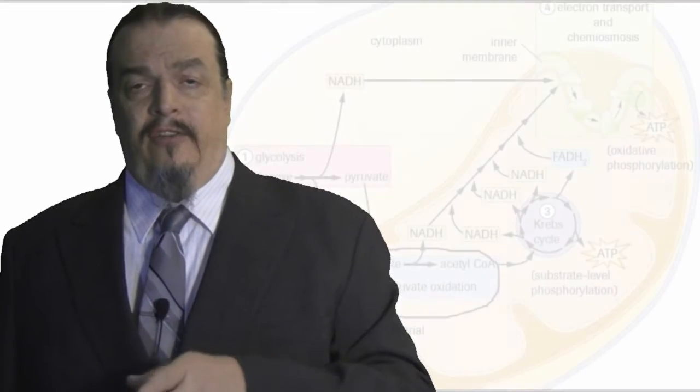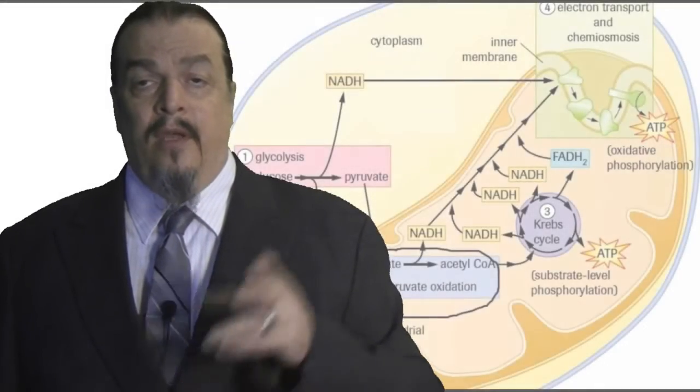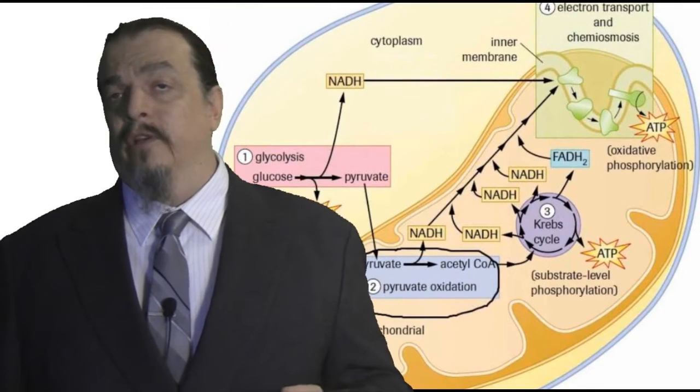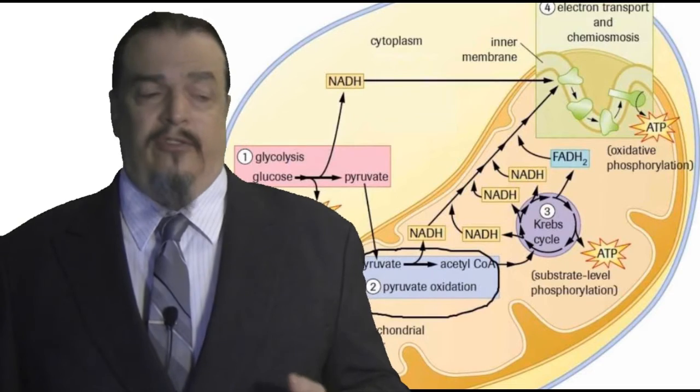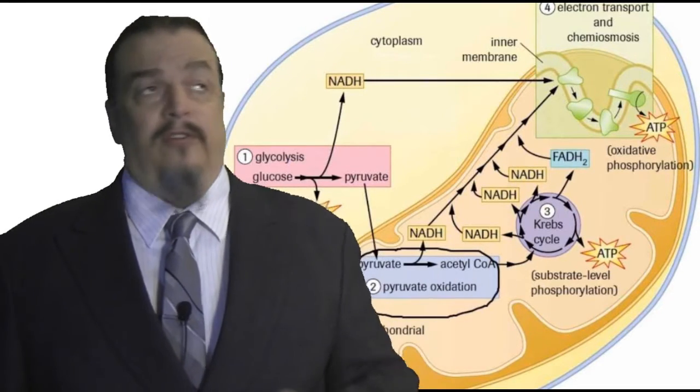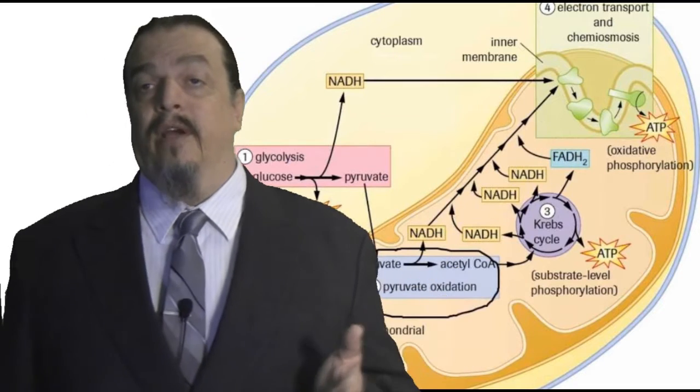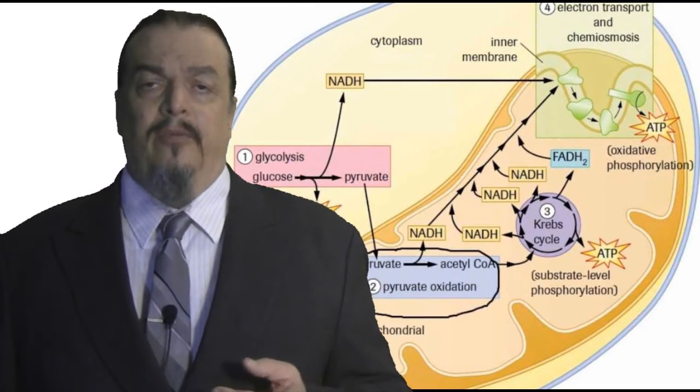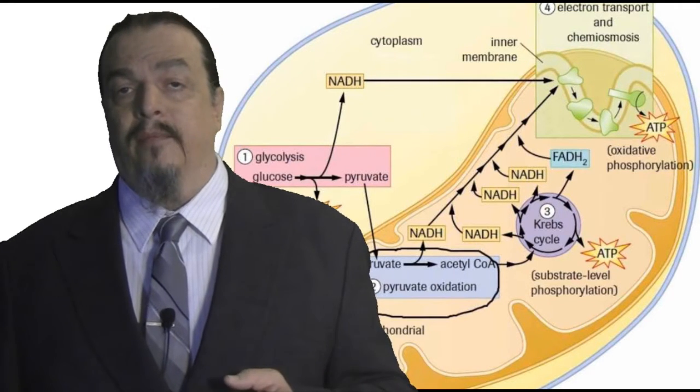But remember those NADHs and FADH2s. The next process couldn't happen without them. It is important to note that even though cellular respiration is described in three stages often in sequential order, the chemicals necessary for this process are flowing continuously throughout the mitochondria and the cytoplasm. Remember those two ATPs that we needed to jumpstart glycolysis? Where did they come from?